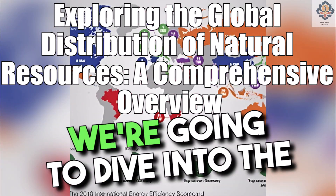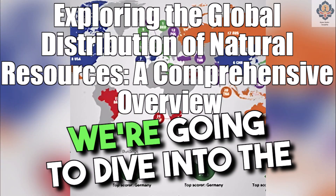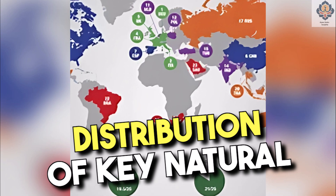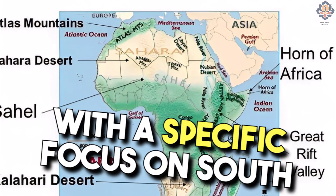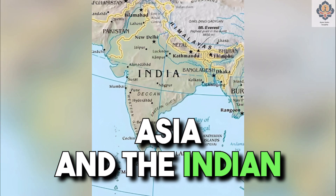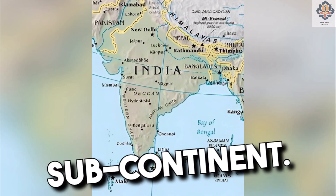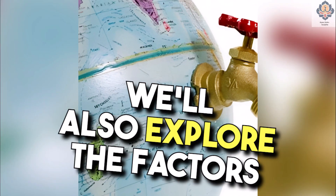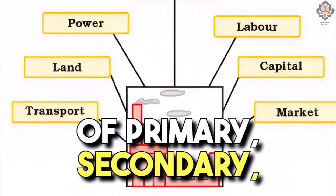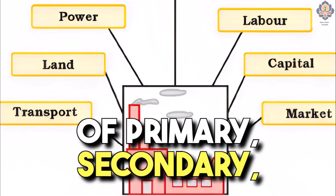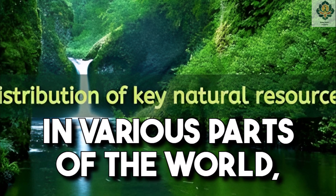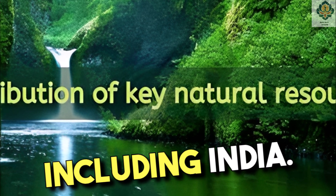Hey everyone! Today, we are going to dive into the fascinating topic of the distribution of key natural resources across the world, with a specific focus on South Asia and the Indian subcontinent. We'll also explore the factors responsible for the location of primary, secondary, and tertiary sector industries in various parts of the world, including India.